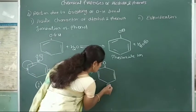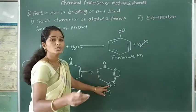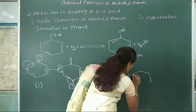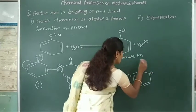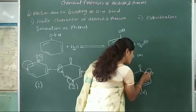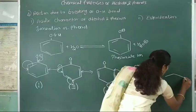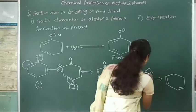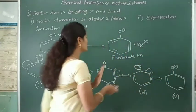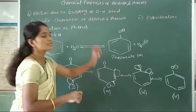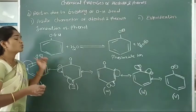In the next resonating structure, the negative charge shifts to the carbon-carbon bond, and the double bond shifts to the next carbon atom. Here, the negative charge is localized at the ortho and para positions. In the last resonating structure, the double bond shifts back to the carbon-oxygen bond, and oxygen again bears the negative charge. The first and last resonating structures are similar.